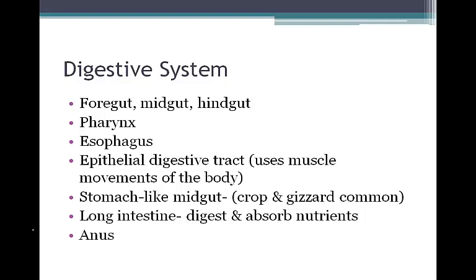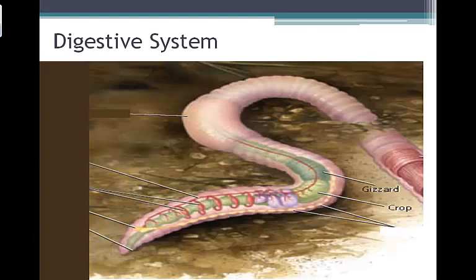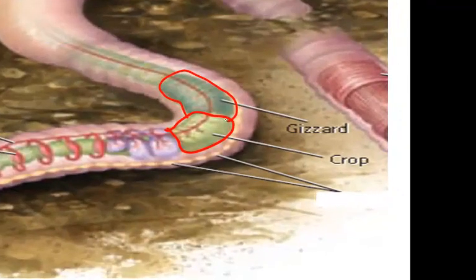They have an anus for waste to be excreted. The crop is a storage place for food before entering the gizzard. The gizzard is a muscular sack containing hard particles that help grind soil and food before they enter the digestive tract. Nutrients are absorbed from the intestines and undigested material is passed out through the anus.